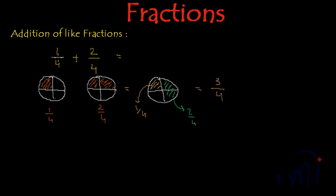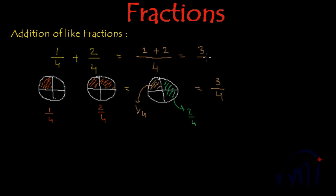If the fractions are like fractions, draw a line — the middle bar — write the denominator as it is, and then you just add the numerators. The numerator of the first fraction is 1 and the numerator of the second fraction is 2, and you will get your result which will be 1 plus 2, that is 3 by 4. And this is the same result which we got by using the pictorial representation of the addition.